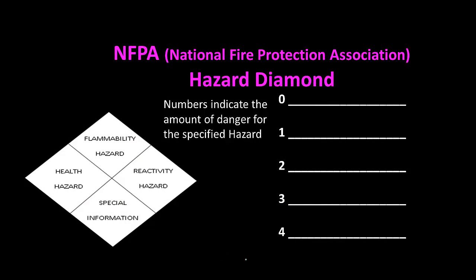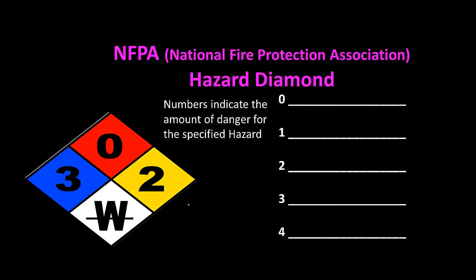Now let's talk about the NFPA hazard diamond. NFPA stands for National Fire Protection Association. In your notes, write what each diamond means and color them: the top diamond is flammability — color it red. The right diamond is reactivity — color it yellow. The bottom diamond is special information — color it white. The left diamond is the health hazard — color it blue.